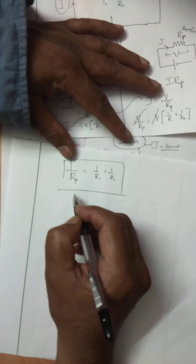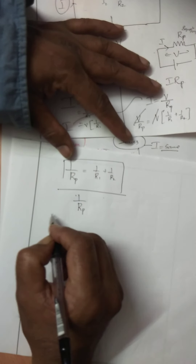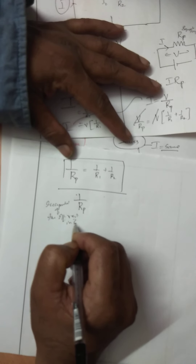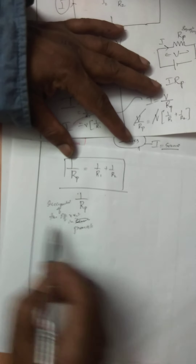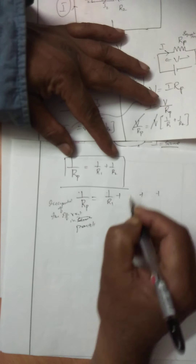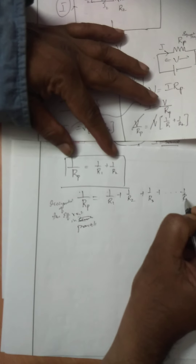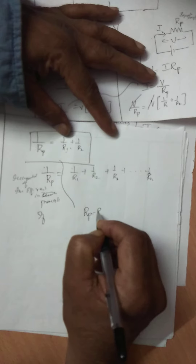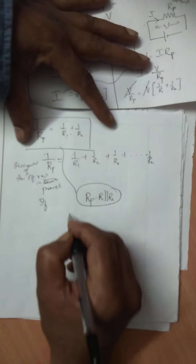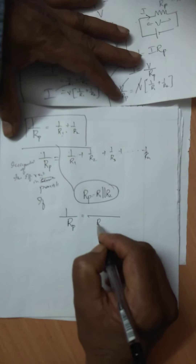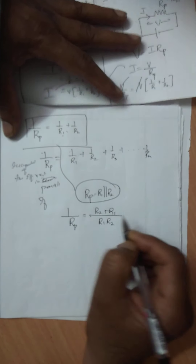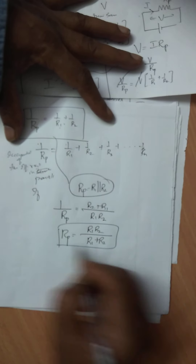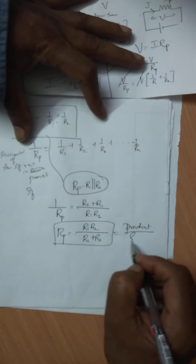Therefore, if several resistors are connected in parallel, the reciprocal of the effective resistance in parallel is equal to the sum of the reciprocals of the individual resistances. When two resistors are in parallel, RP equals R1·R2 divided by R1 plus R2, which is the product divided by the sum.